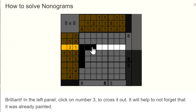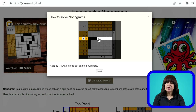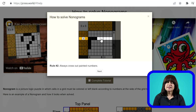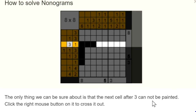It says in the left panel, click on the number 3 to cross it out — so that you don't forget that it's already painted in. If you click on the 3, it grays it out. Rule number 2: always cross out painted numbers. In some nonogram apps, you can click on the white space after the painted-in cells, since that has to be left blank — there always has to be a space after a group of painted cells. Meanwhile, there's also a number 1 in the row, and we don't know yet where it goes — it can be in any of these 4 spaces. But the only thing we can be sure about is that the next cell after the 3 cannot be painted.